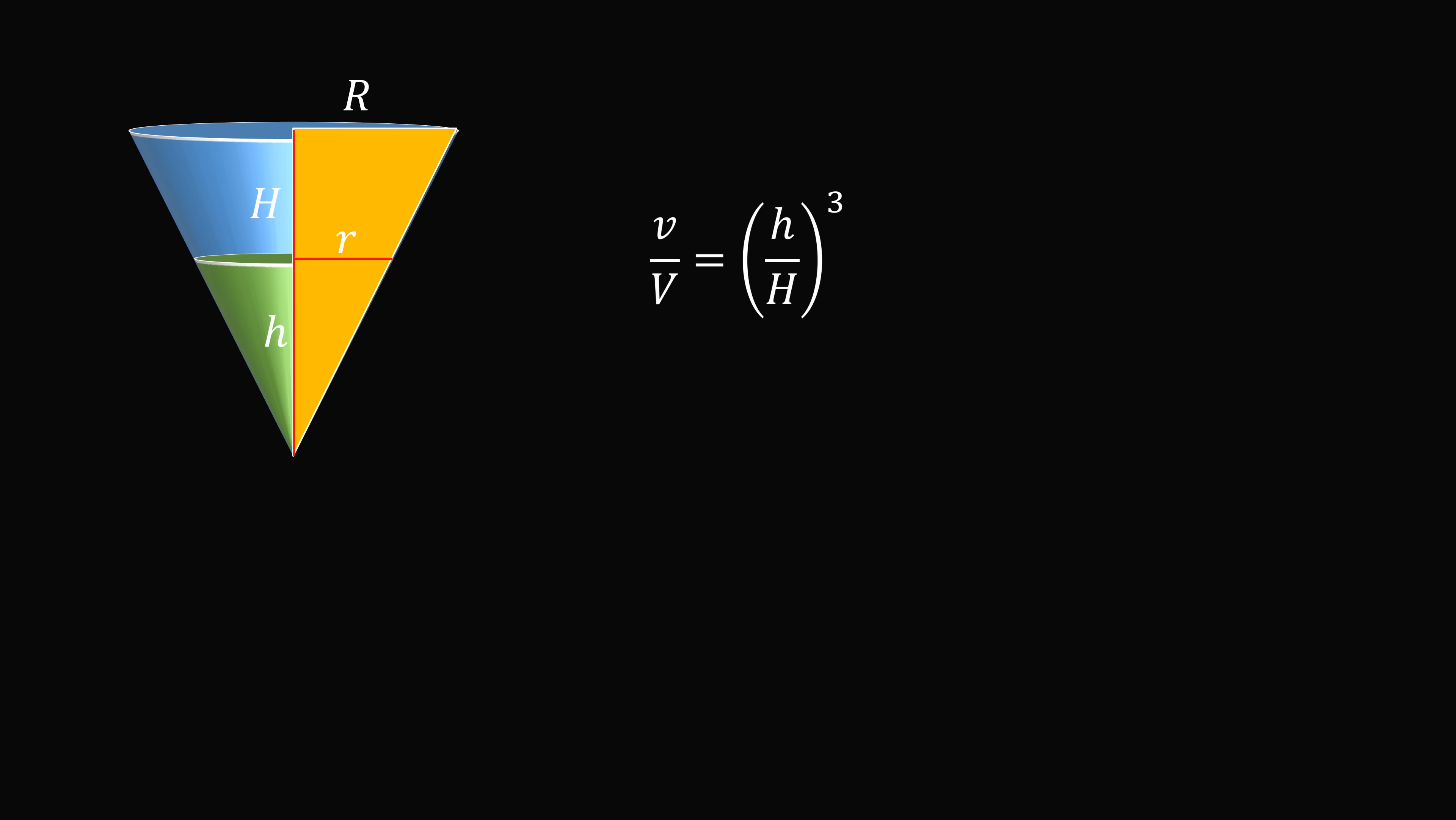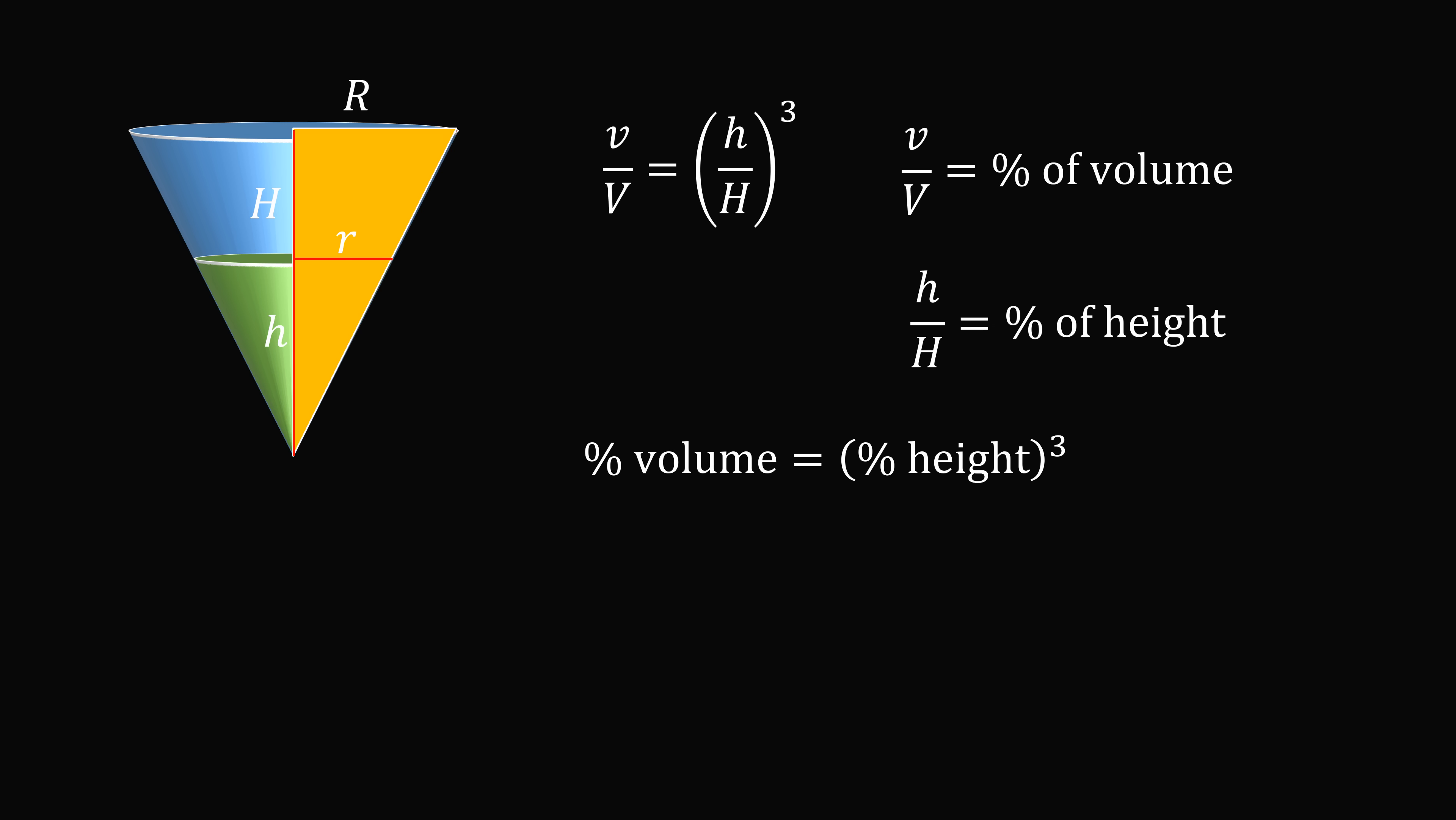So let's just do some interpretation of this formula. Lowercase v divided by uppercase v will be equal to the percentage of the volume of the large cone. We then have the ratio of heights will be the percentage of the height. So this formula is the percentage of the volume is equal to the cube of the percentage of the height. And notice it does not depend on the radius value or the angle of the cone because we have these similar triangles that relates the radii and the heights.